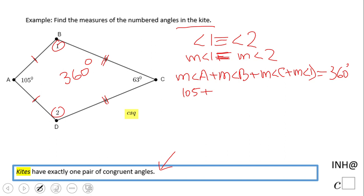Let's replace this with X. Measure of angle B, which is angle 1, is X. Measure of angle C is 63. And the measure of angle D, which is angle 2, I'm gonna call it again X, and that equals 360.